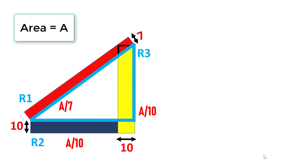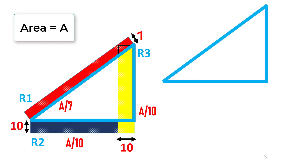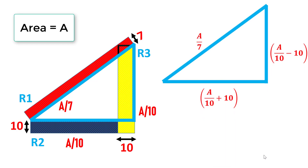Now we have enough data on all three rectangles. Consider the highlighted triangle — this is a right angle triangle. According to the Pythagorean theorem, the square on the hypotenuse of a right angle triangle is equal in area to the sum of the squares on the other two sides.